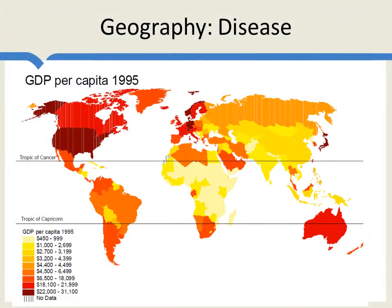Here we see the same data in map form. Outside the Tropic of Cancer in the Northern Hemisphere we see lots of rich countries, and outside the Tropic of Capricorn in the Southern Hemisphere we see richer countries. One wonders if there had been more mass — another continent — down here, whether we might have seen more rich far-southern countries. In the middle, in the equatorial regions, there is great poverty. Why is this?